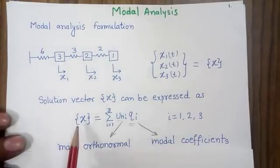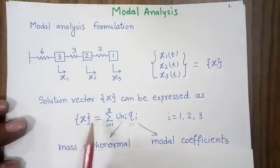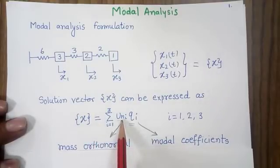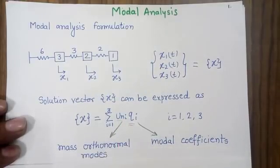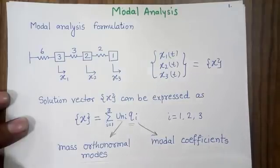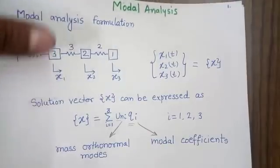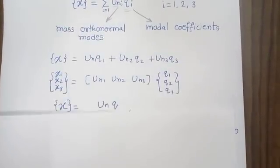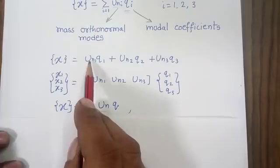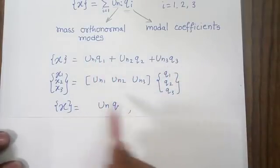In modal analysis we consider a solution vector where the response X of the system can be represented as the summation of two quantities: UN and Q. UN represents the mass-orthonormal modes calculated previously, multiplied by a modal coefficient. Opening this term, X equals the first mode times Q1, second mode times Q2, and third mode times Q3.